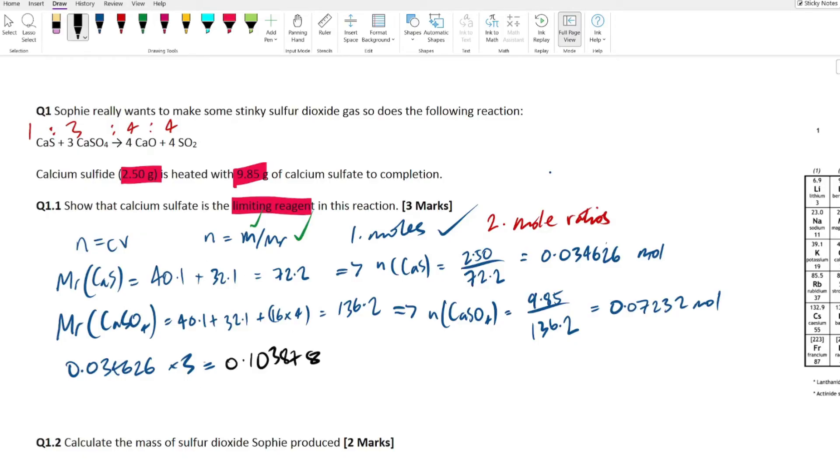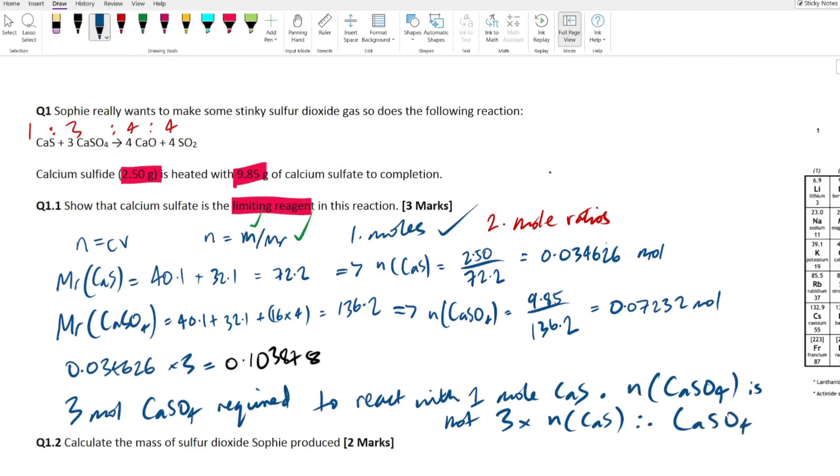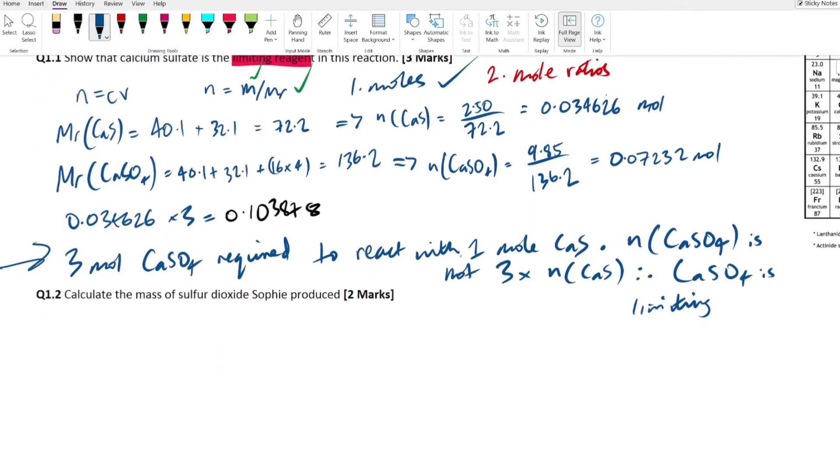And then you just look at the ratio and you say, okay, does this match the ratio that we see existing in the equation itself? If not, that one is limiting. Hopefully that makes sense. So then we would say for our answer, three mole calcium sulfate required to react with one mole calcium sulfide. Moles calcium sulfate is not three times moles calcium sulfide, therefore calcium sulfate is limiting. Boom. Three marks. So that's our first three marks here.